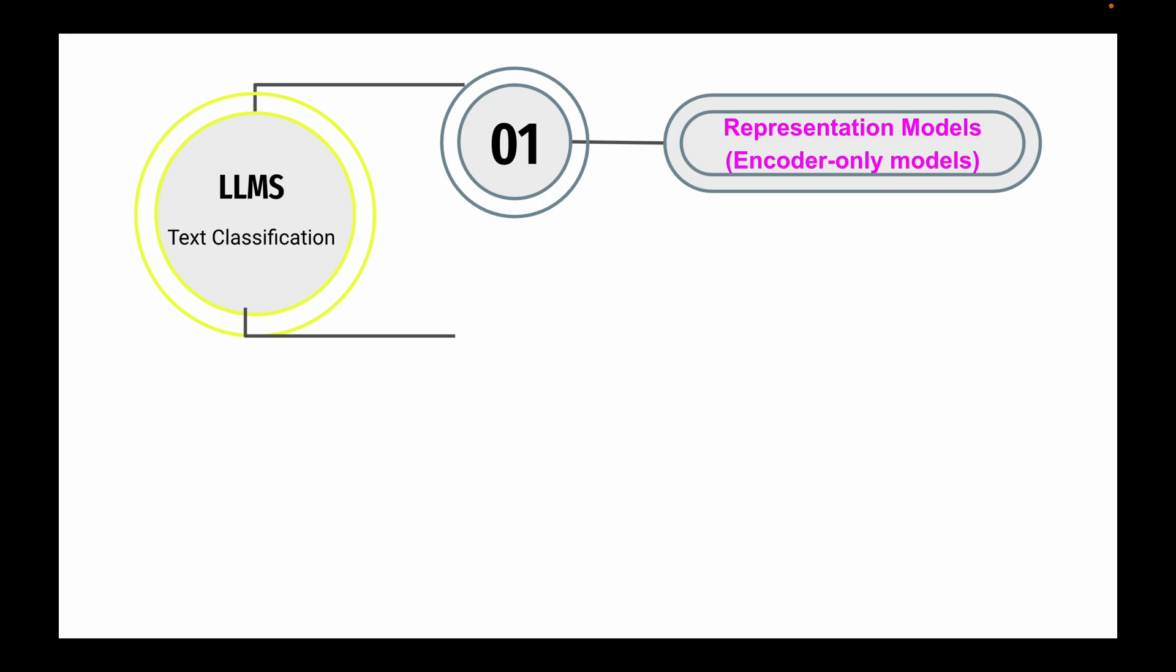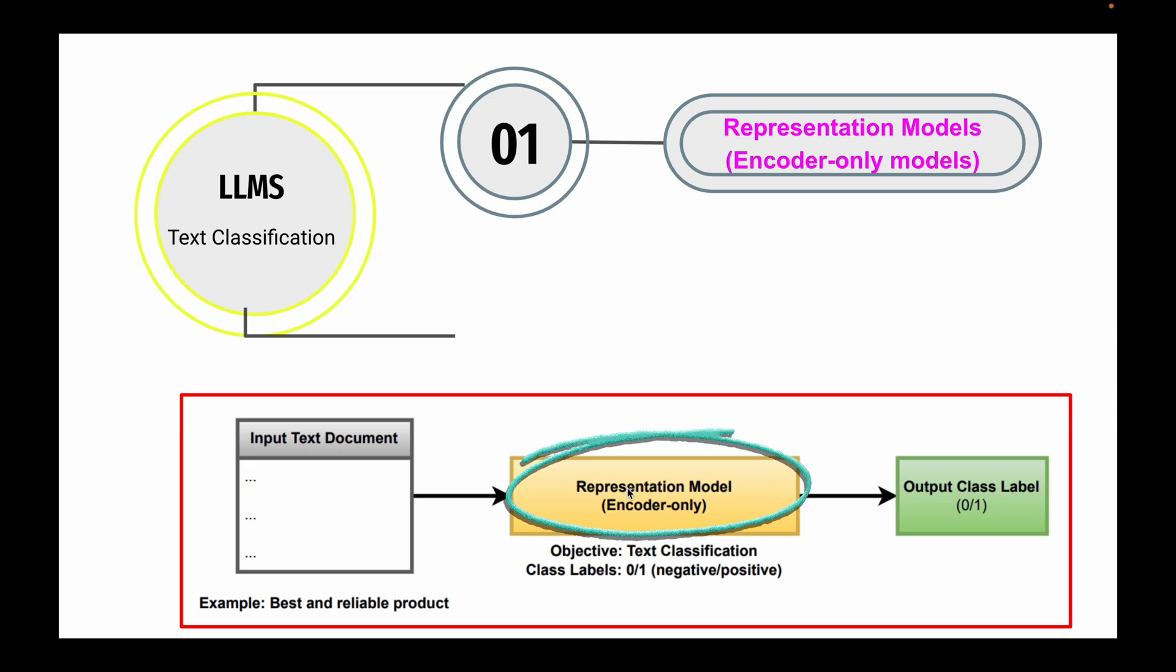There are two major ways to use LLMs for text classification. The first is using representation models or encoder-only models. This diagram shows an overview of how representation models work for text classification. The input is a text document and the output is a class label. The class label might be 0 or 1, where 0 represents negative sentiment and 1 represents positive sentiment. There can be more than two class labels as well.